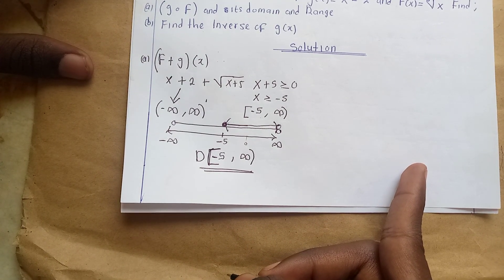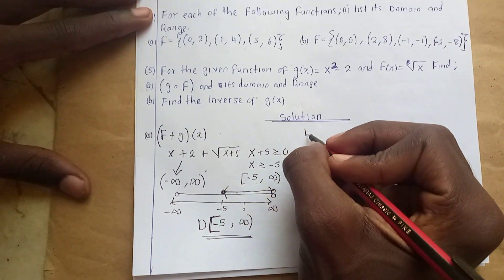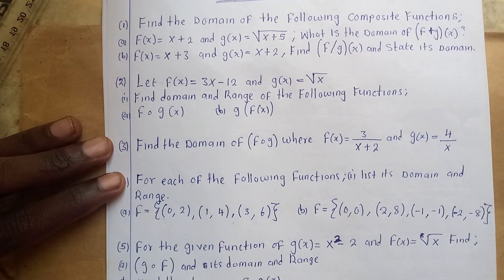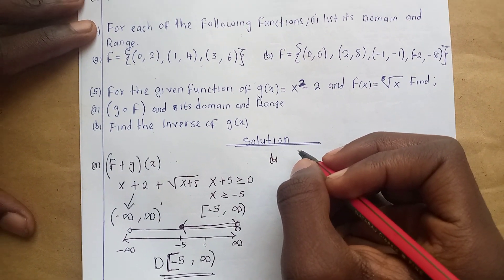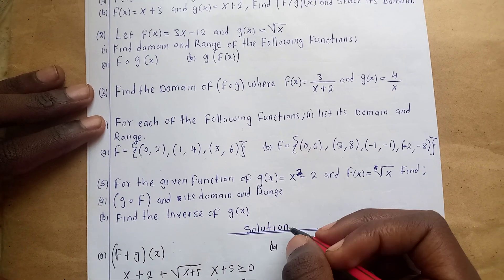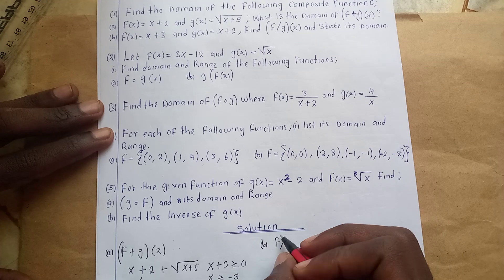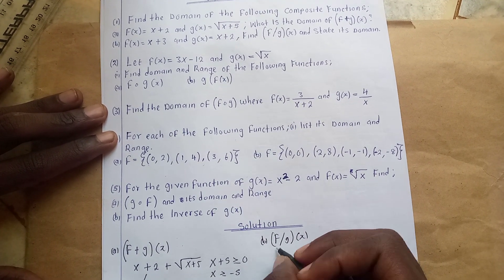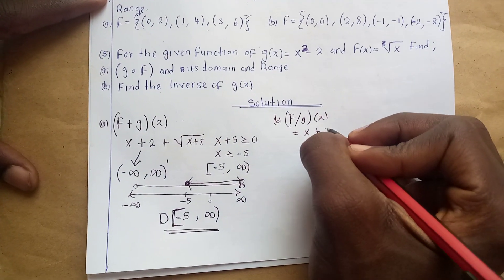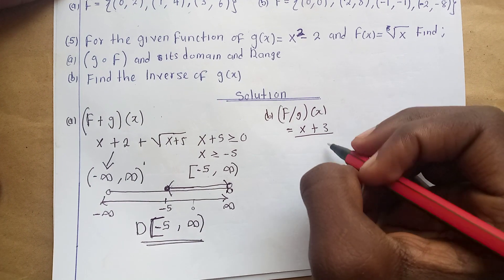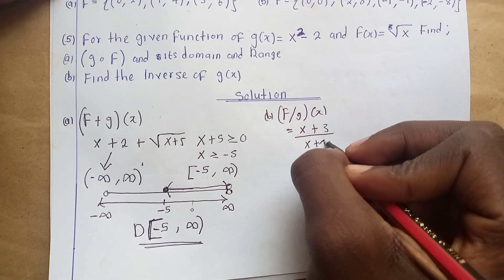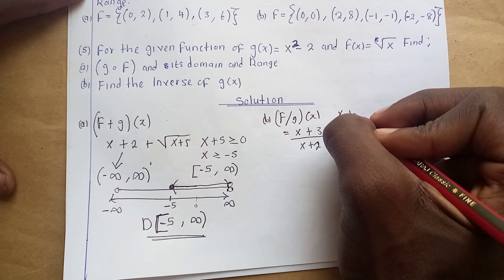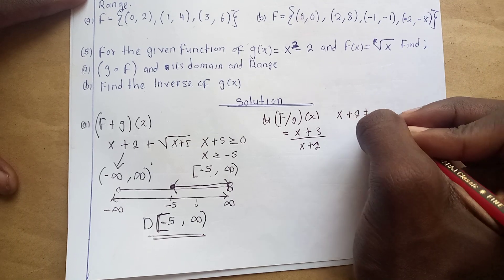Now for question (b): f(x) equals x plus 3 and g(x) equals x plus 2, and we find f over g evaluated at x. We get f(x) over g(x), which is (x + 3) over (x + 2). We deal with the denominator: x plus 2 must not equal zero.